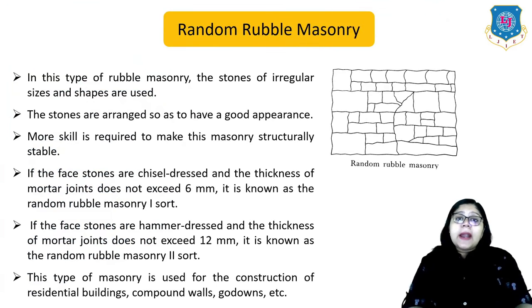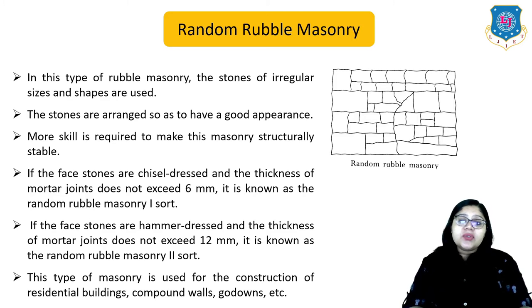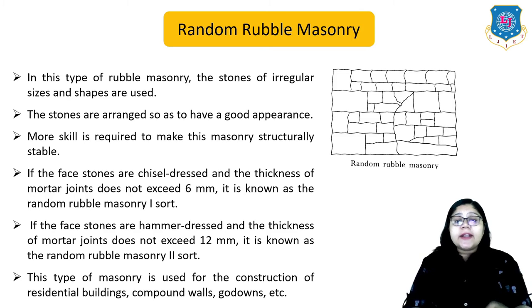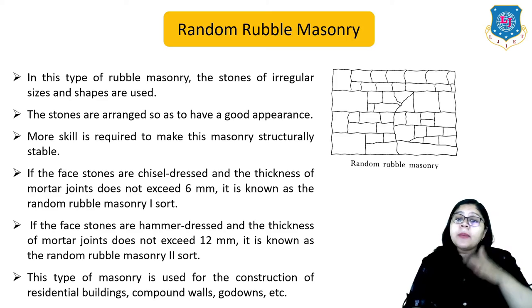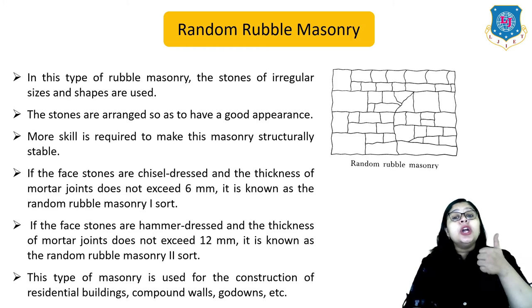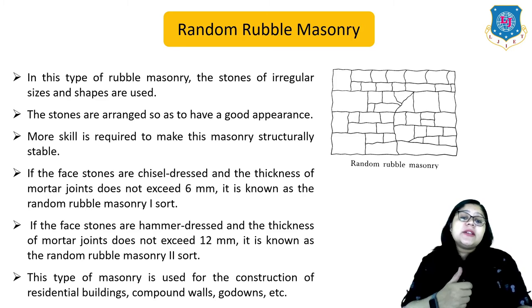In random rubble masonry, stones of irregular sizes and shapes are used and arranged to have a good appearance. More skill is required to make this masonry structurally stable. If the face stones are chisel-dressed and the mortar joint thickness does not exceed 6 mm, it is known as random rubble masonry one-shot. If the face stones are hammer-dressed and mortar joint thickness does not exceed 12 mm, it is known as random rubble masonry two-shot. This type is used for residential buildings, compound walls and godowns.